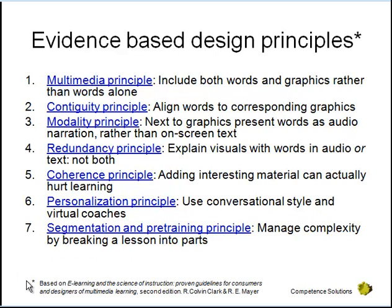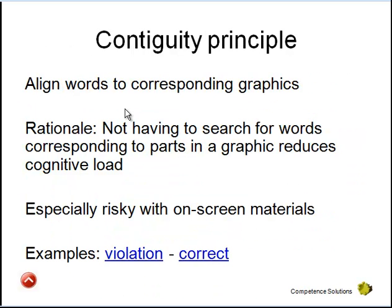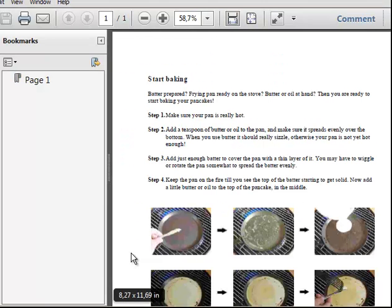The second principle is the contiguity principle: align words and corresponding graphics. The idea is that you should not confuse the learner by having text and graphics that don't match or are too far apart from each other. This is especially risky with on-screen materials where on one screen you have the text and then have to scroll down to see the graphic, so the relation between the text and the graphic is lost to the learner.